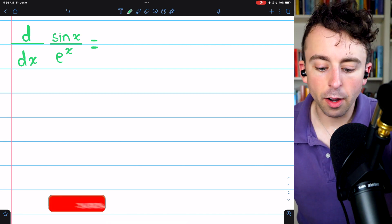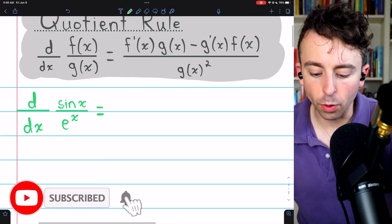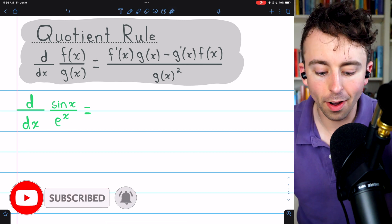To find the derivative of sin x divided by e to the x, we simply need to use the quotient rule, since it is a quotient of functions.